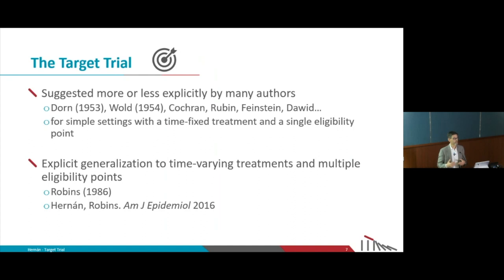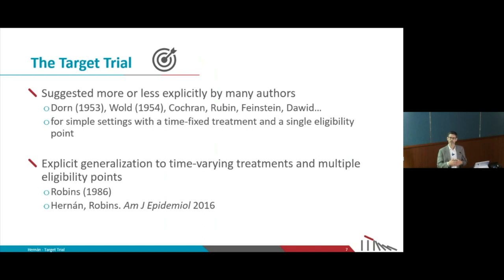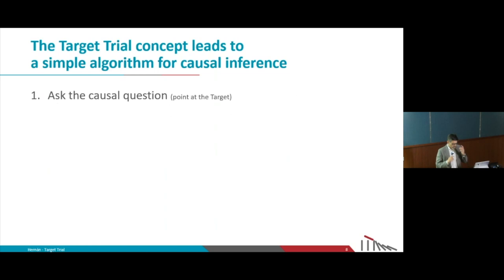What I'm going to describe is based on the way Robbins started to think about these complex questions with time-varying treatments and time-varying confounders, though in the interest of time I'll focus on non-time-varying treatments. Once we start thinking about causal inference in terms of emulating a target trial, there are really only two steps: first we ask the causal question, and second we answer it.